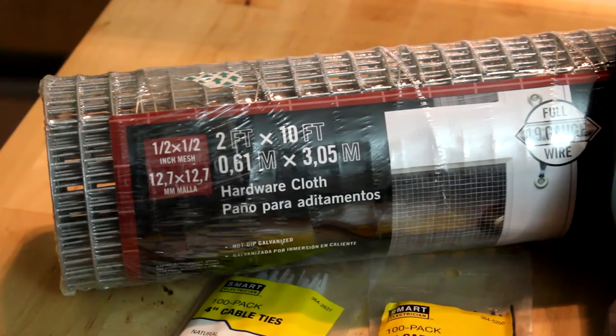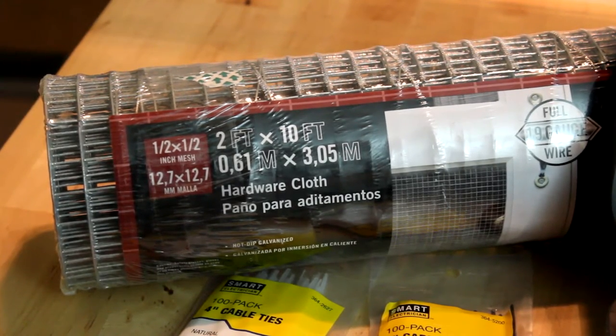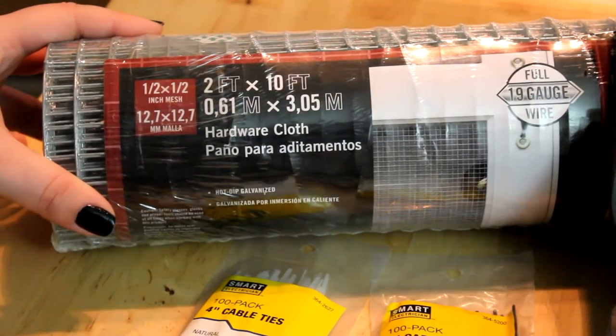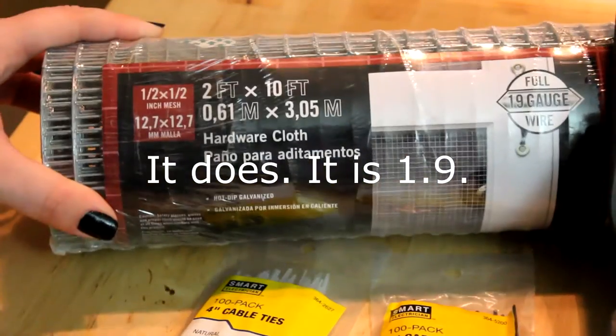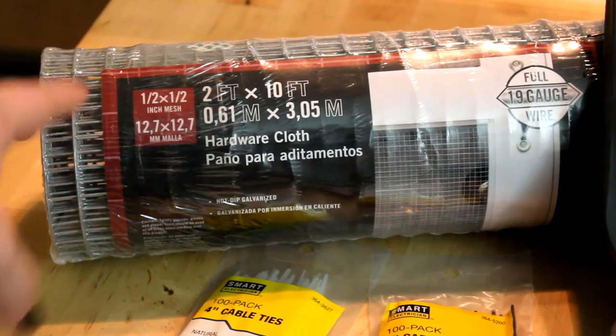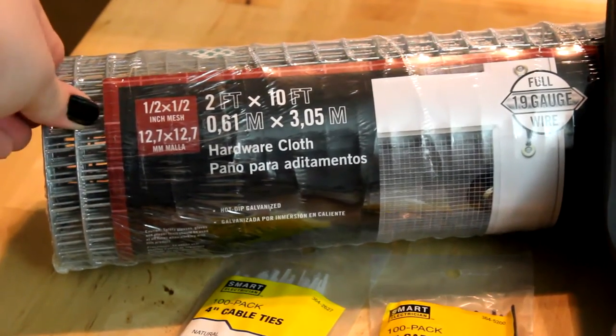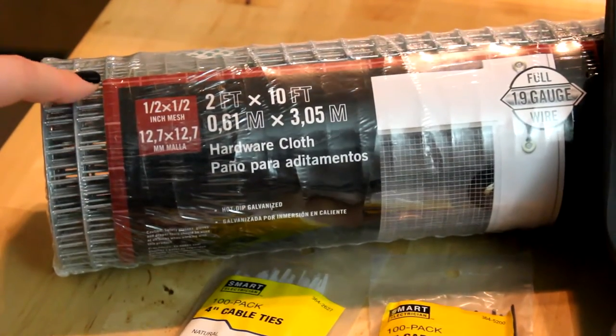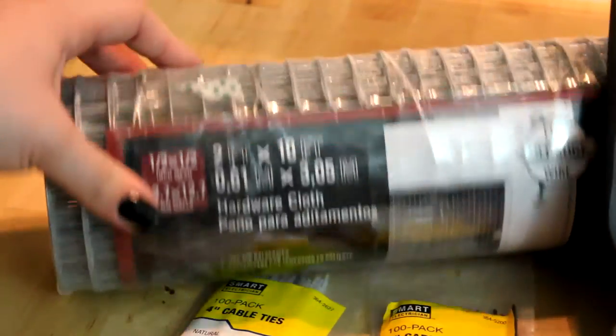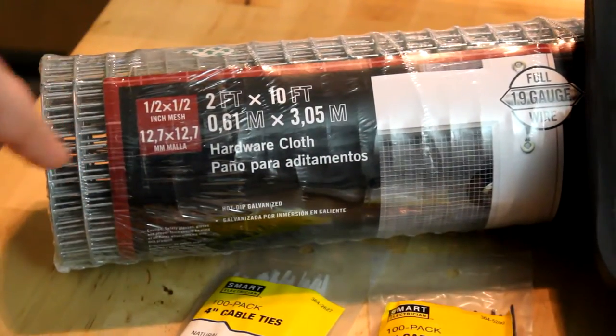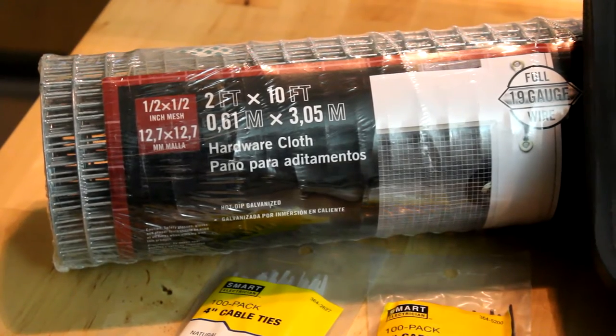This is the hardware cloth I'm using. It's two feet by ten feet. The holes are half inch by a half inch. I wouldn't go any bigger than that. You can go smaller than that. If you do go smaller than that, make sure you still get a thick gauge hardware mesh. Because if you get things like screening and they reach it, they can actually chew through it.